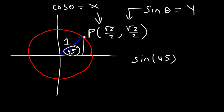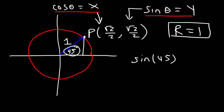Cosine theta is equal to the x value of any terminal point on a unit circle. So keep in mind, for the unit circle, the radius is always 1. And when r is 1, cosine is equal to x and sine is equal to y. So if we want to find the value of sine 45, it's simply equal to the y-coordinate of the point associated with 45 degrees, which is the square root of 2 divided by 2.